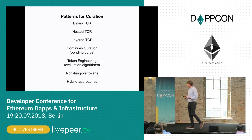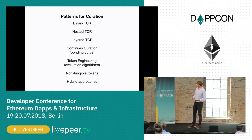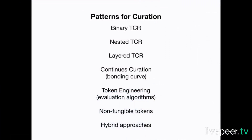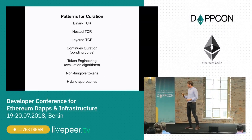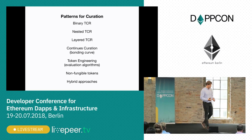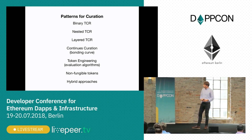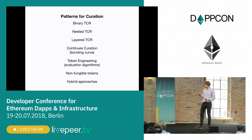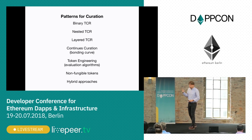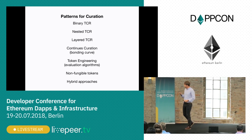Basic TCR, or binary TCR, meaning you can be in or out, is only one approach to curate data. As we already saw, there is nested TCR - TCR of TCRs. There is a layered TCR approach where it depends on your reputation, what impact you're going to have on the registry. Once you get better, your reputation improves, and the more impact you have on the registry. There's continuous curation and the key feature called Bonded Curve - an approach that can create a price for the token based on token circulation. Token engineering, more engineering, UI, and the key component is mechanism design. There's also non-fungible token support - basically the ability for an ERC-721 non-fungible token to be represented by an ERC-20 token smart contract, and you can mix that however you want.